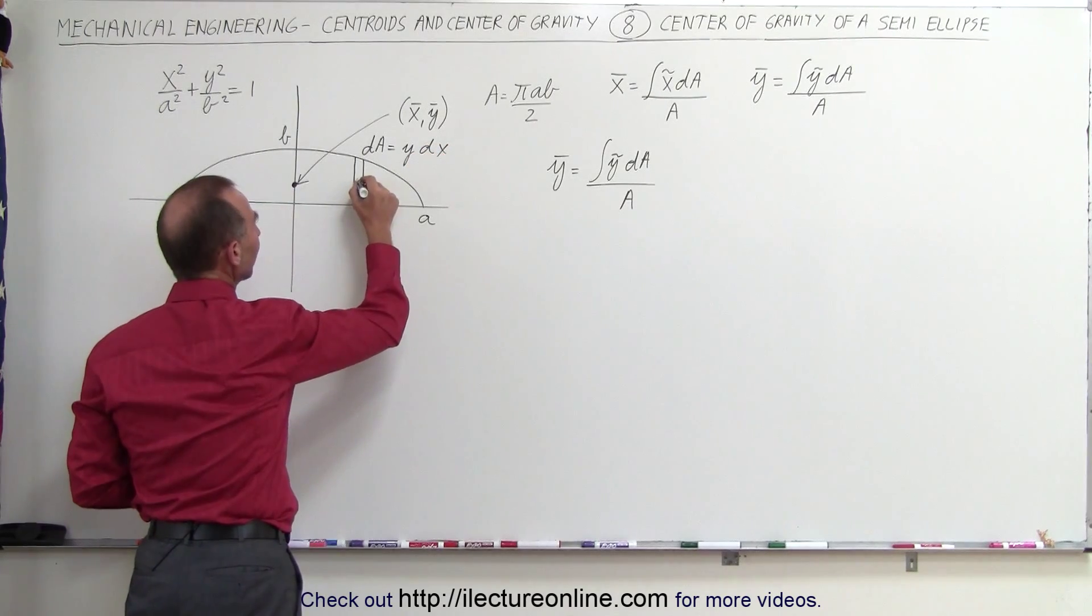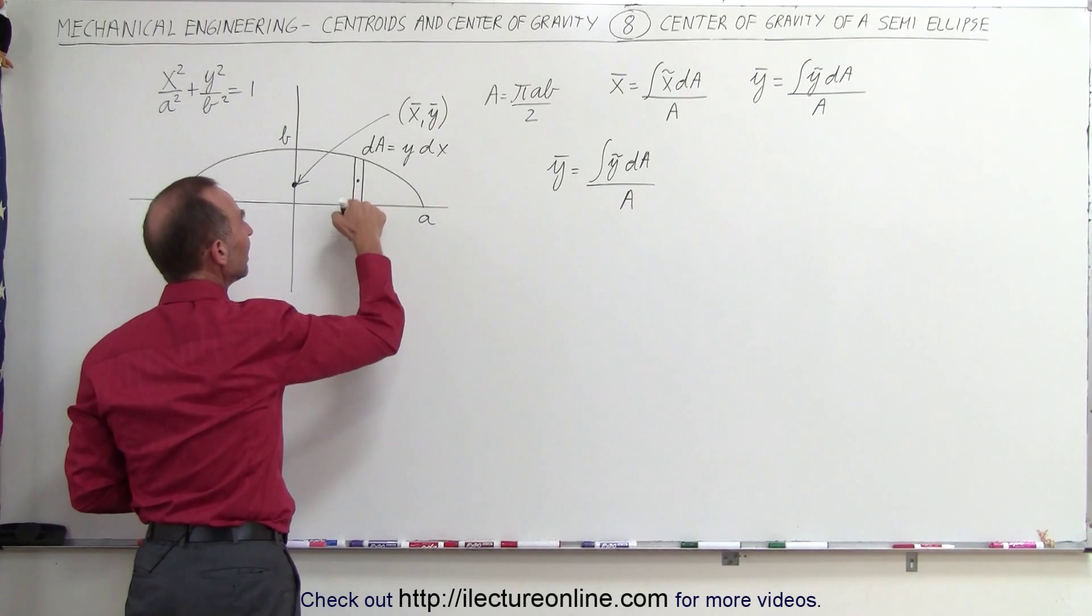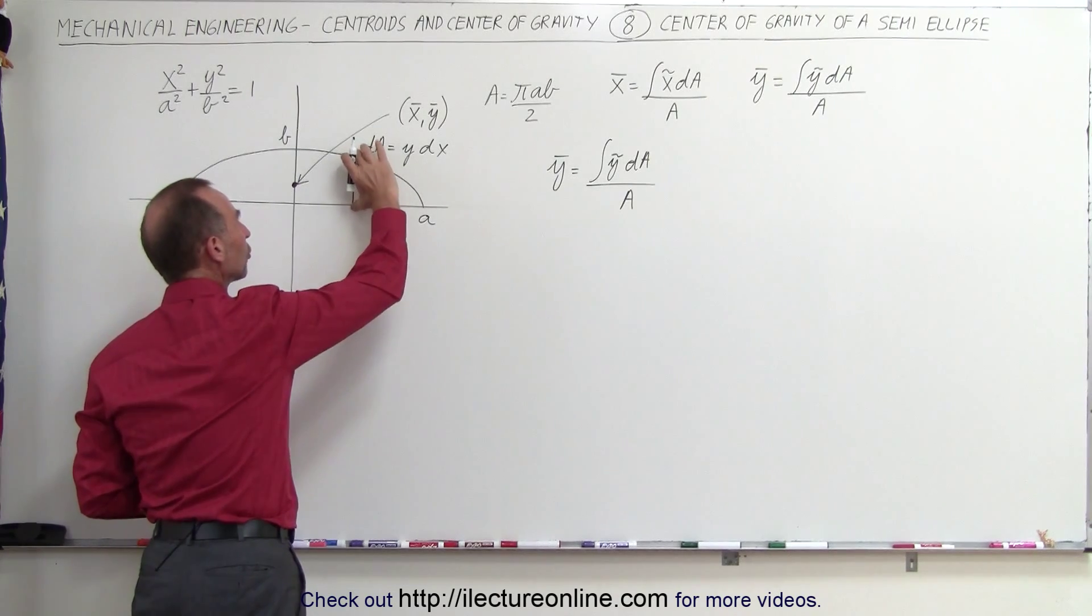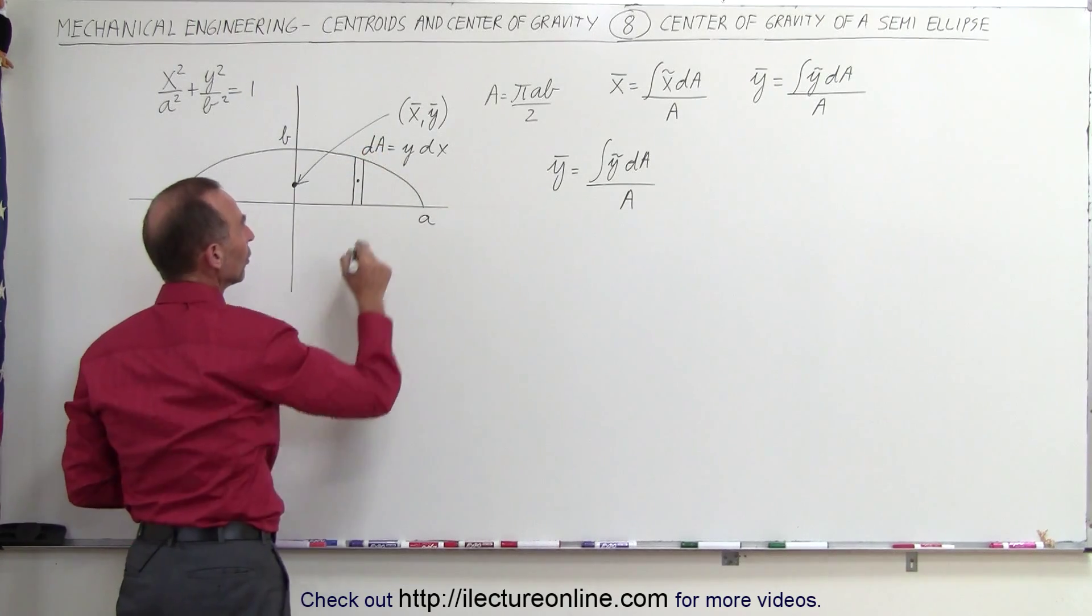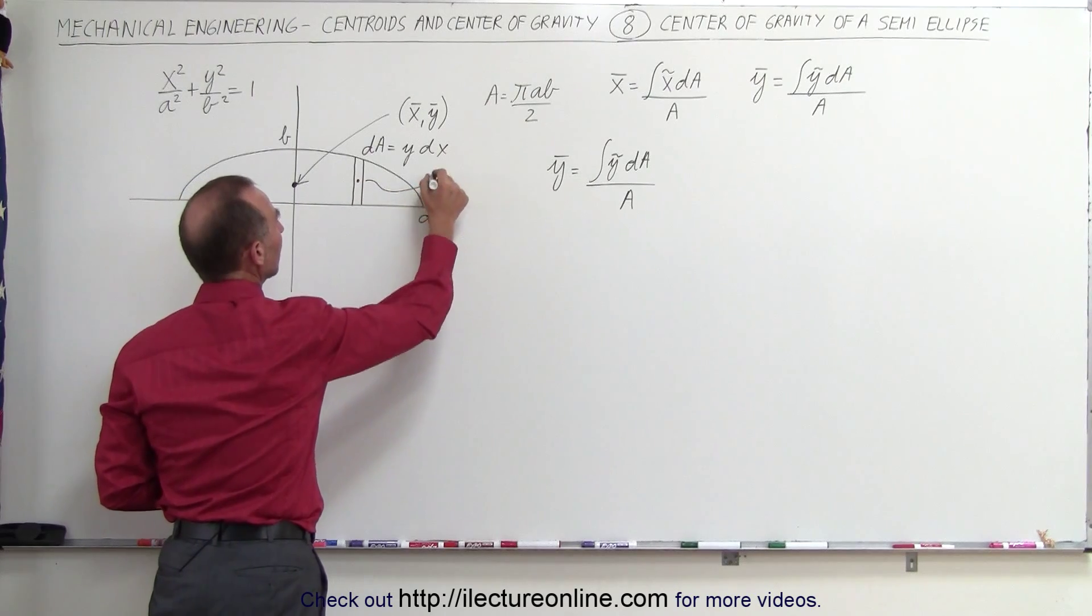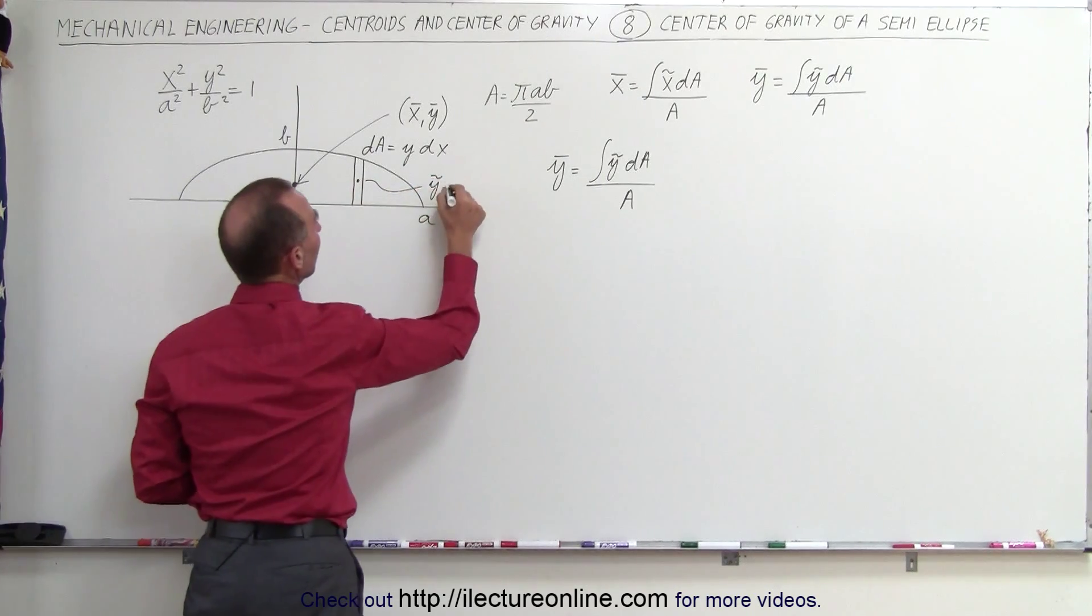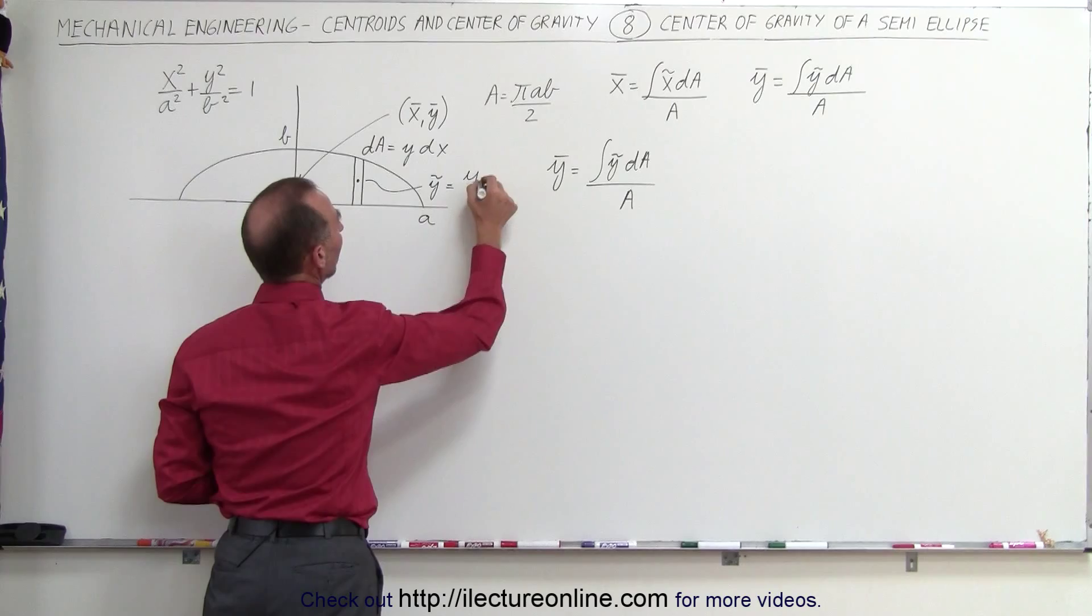And then if we want to find the center of gravity of that small little piece in the y-direction, that will be equal to the total height y divided by 2. So the y-coordinate of that small little piece is equal to y divided by 2.